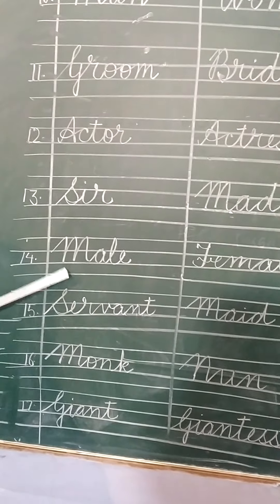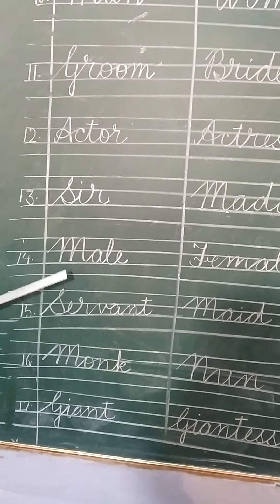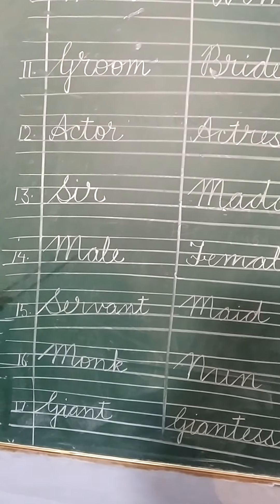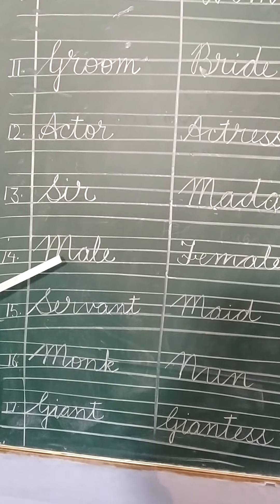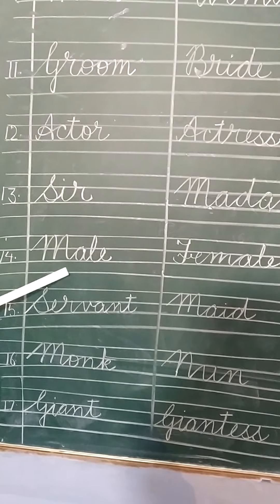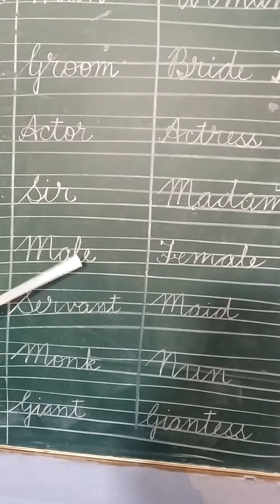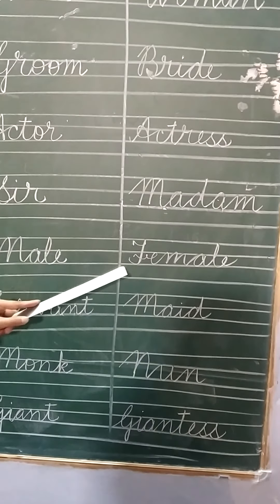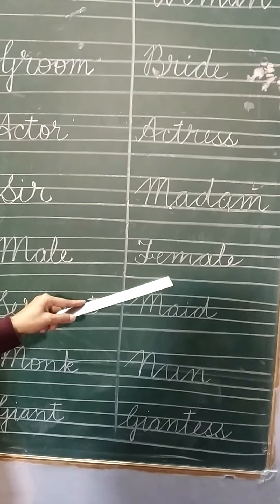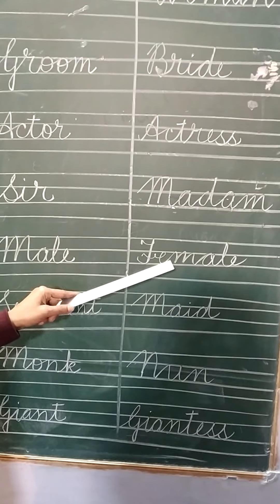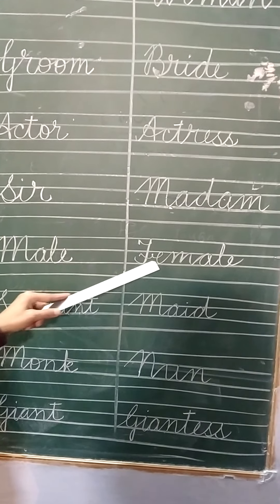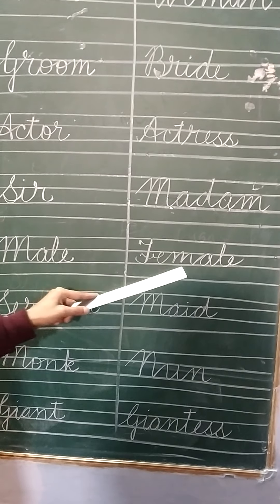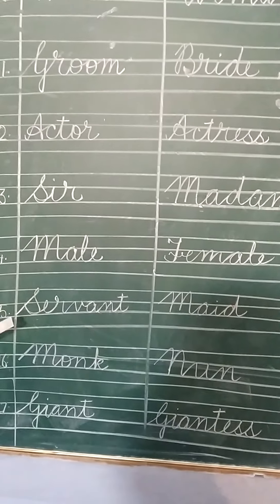Number 14 is male. If we are talking about a man or boy, then we say male. M-A-L-E, male. When we are talking about a girl or woman, then we say female. F-E-M-A-L-E, female.